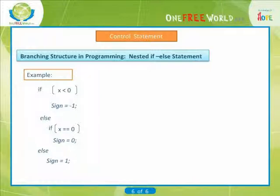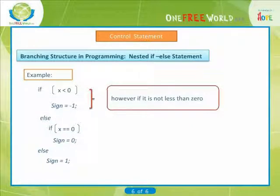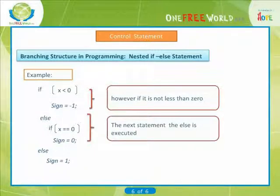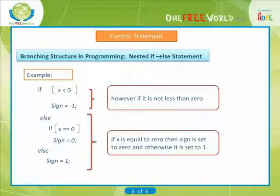This is an if-else statement in which the statement following the else is itself an if-else statement. If x is less than zero, then sign is set to -1. However, if it is not less than zero, the statement following the else is executed. In that case, if x is equal to zero, then sign is set to 0, and otherwise, it is set to 1.